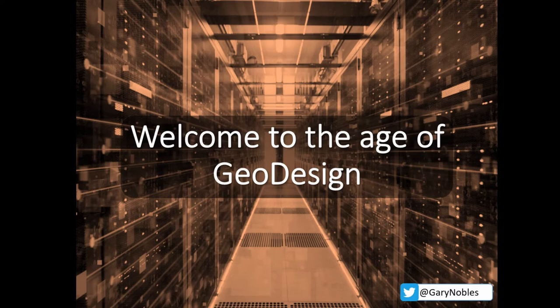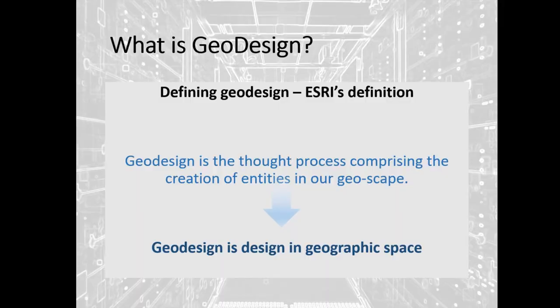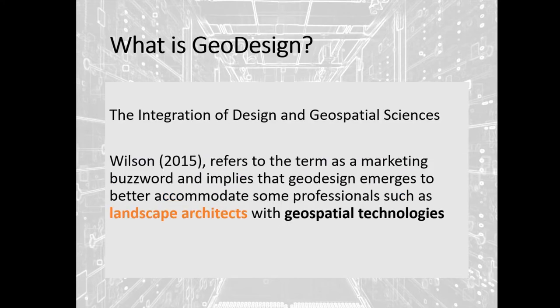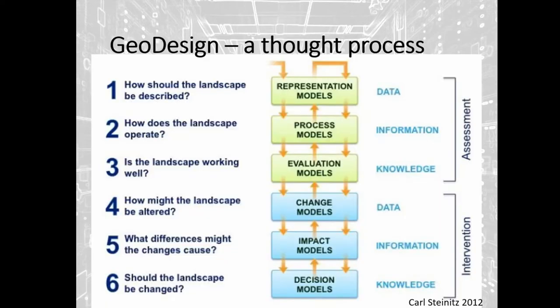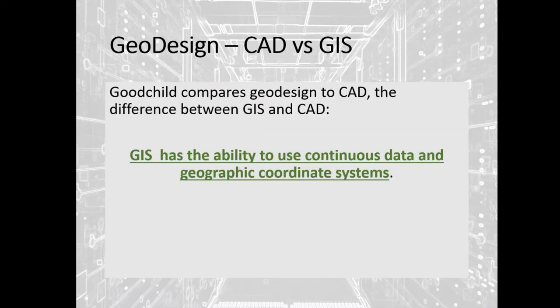Something that's really come about over the past five years is the concept of geo design. Esri defines it as the thought process comprising the creation of entities in our geoscape — simply put, design in geographic space, integrating design with the geospatial sciences. Some, like Wilson, see it as a marketing buzzword, but it's really about how spatial planners work with assessment of space, intervention, and how those interventions are then re-assessed.